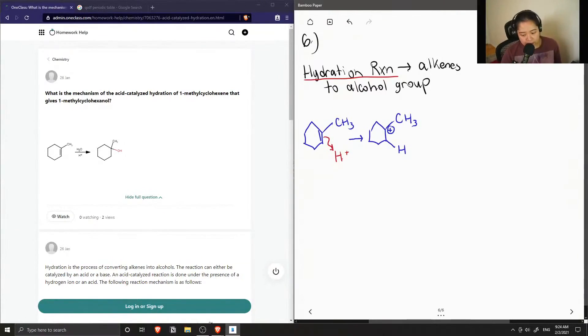It's more likely that the positive charge will be on the carbon that has the extra methyl group, since the extra substituent makes it a little more stable. This is called a tertiary carbon compared to just a secondary carbon.